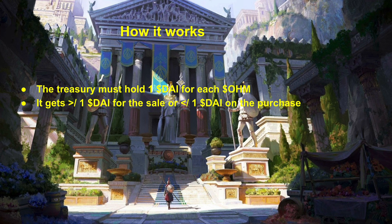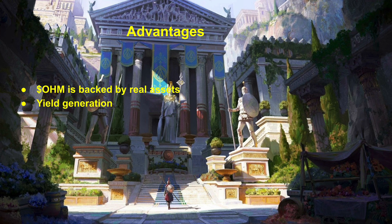This means that because the treasury must hold one DAI and one DAI backs each OHM, every time it buys or sells, it makes a profit. In other words, the Olympus DAO treasury gets more than one DAI for the sale, or spends less than one DAI on the purchase.